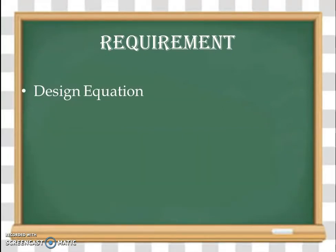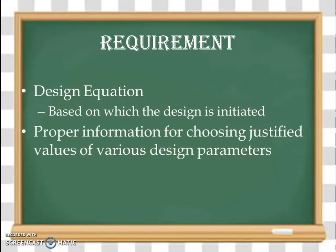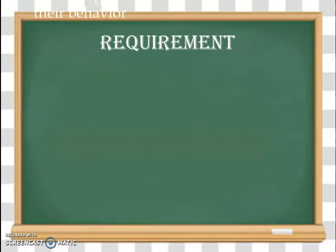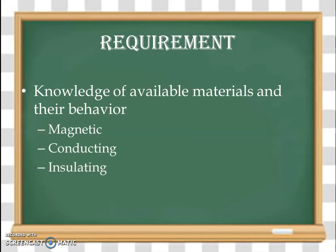Then we need the design equations based on which the design is initiated, and proper information for choosing justified values of various design parameters — like specific magnetic loading and specific electric loading. We also need knowledge of available materials and their behavior: we use different magnetic materials, conducting materials, and insulating materials, so knowledge and behavior of all these available materials must be decided.